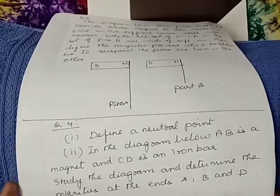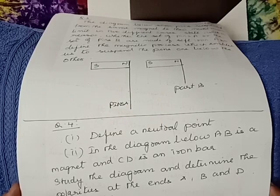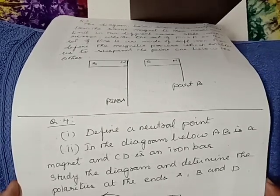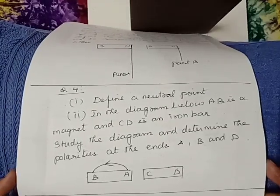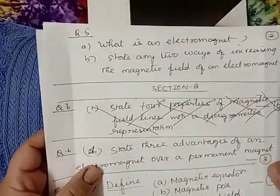Question number 4: Define a neutral point. In the diagram below, AB is a magnet and CD is an iron bar. Study the diagram and determine the polarities at the ends A, B, and D. Allotment: 2 marks.